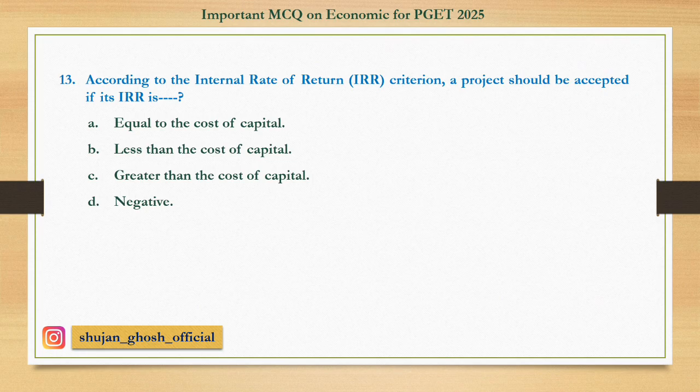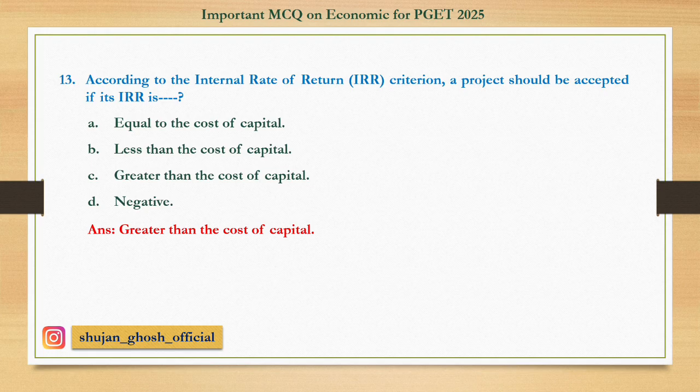Question number thirteen: According to the internal rate of return criteria, a project should be accepted if its IRR is — option A: equal to the cost of capital. B: less than the cost of capital. C: greater than the cost of capital. D: negative. Answer: greater than the cost of capital.